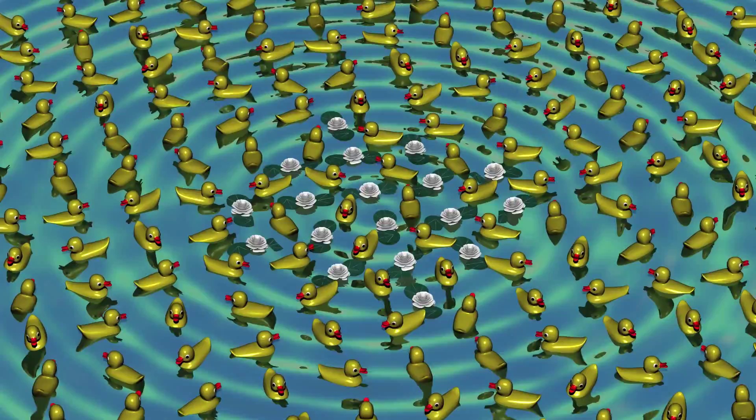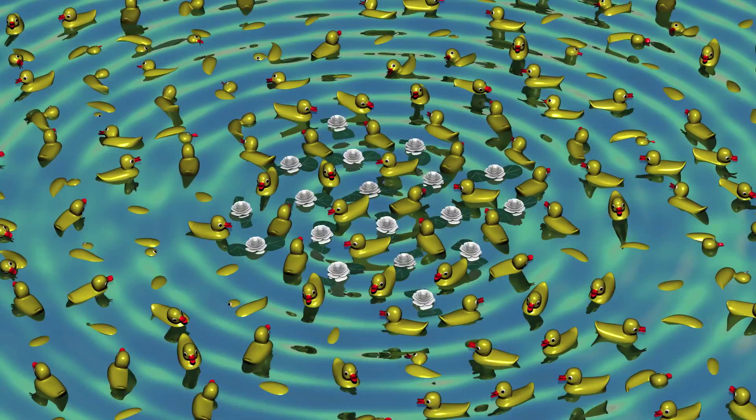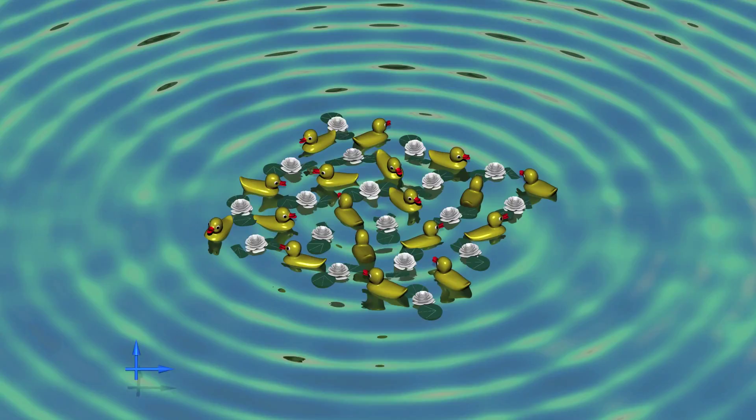When there are fewer and fewer water lilies, the ducks have less and less to eat, and their number decreases. So we have come full circle and can start again.